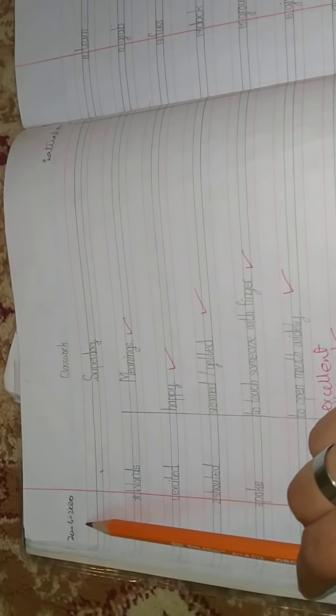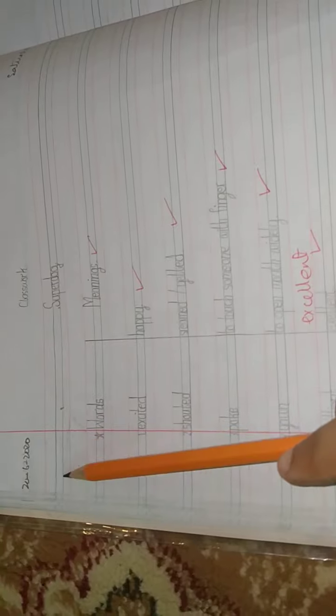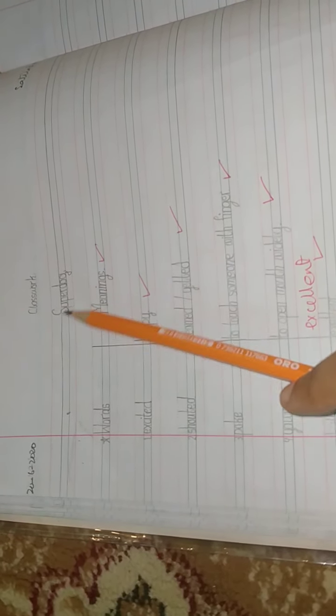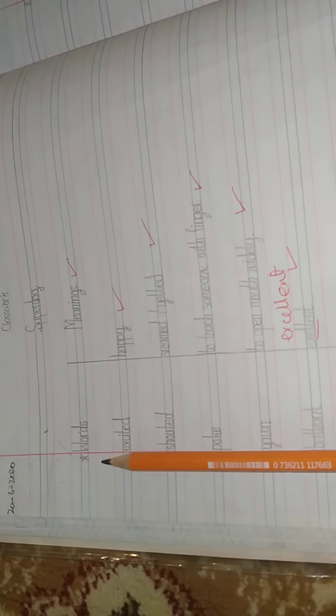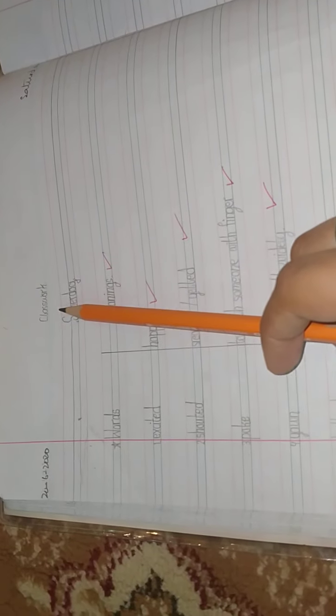Now we're going to start our words meanings. Write Super Dog in the corner, you can write it in the corner or you can just simply write it in the middle. Write words and meanings, draw your margin line, this is very important. You can also write C.W. if you do not want to write classwork.